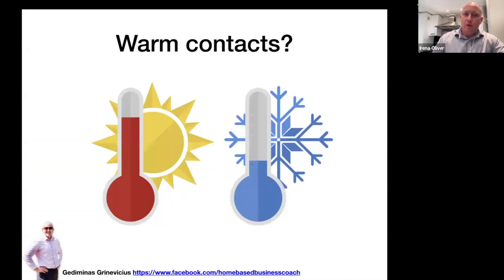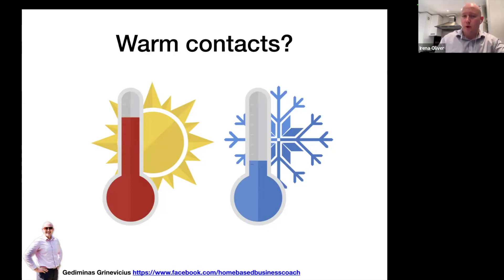So what is warm market, and what is cold market? Warm market is basically people that you know — your friends, family, work colleagues, neighbors, people you used to go to school with, study with, etc. Cold market is basically the rest of the world, the people that you don't know — the remaining 8 billion people on this planet.